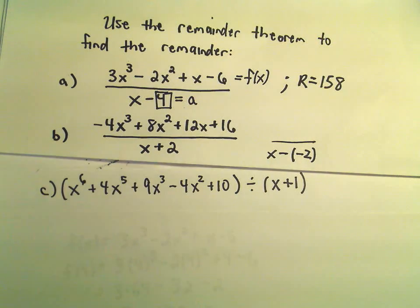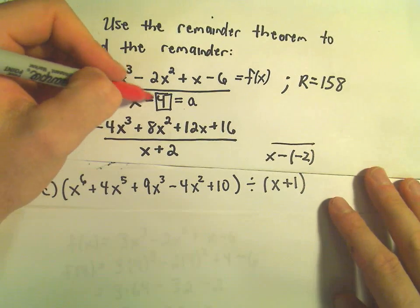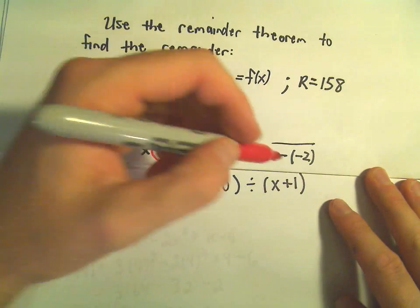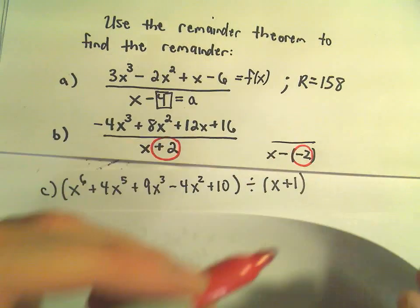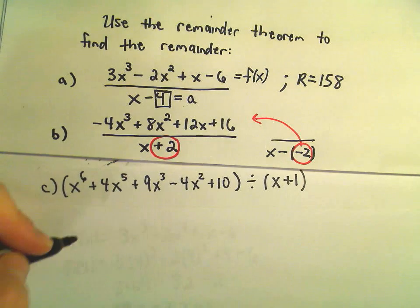So the number you're plugging in - like in the first example, I saw a negative 4 but I plugged in positive 4. Here I see a positive 2, but I'm actually going to plug negative 2 into the function in the numerator.